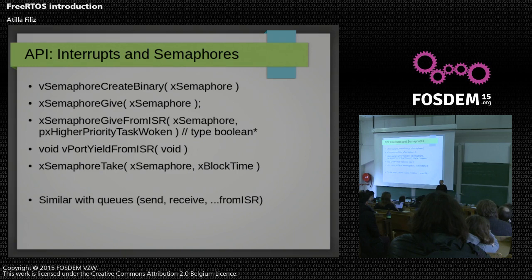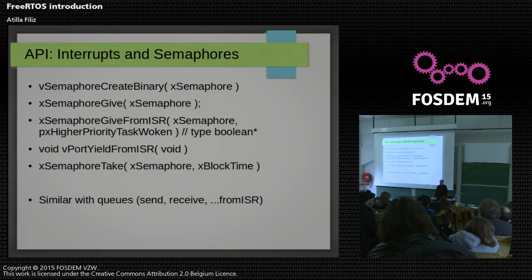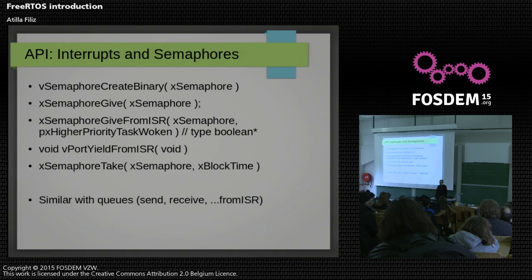We have a semaphore API. Basically you create a binary semaphore, then give and take them. One important thing about interrupts is that a lot of API functions have their FromISR variants. For example, xSemaphoreGive and xSemaphoreGiveFromISR — if you are running from within an interrupt service routine, you need to use the FromISR routines so that it doesn't interfere with context switching. Messaging queues also have their variants with send, receive, and FromISR.